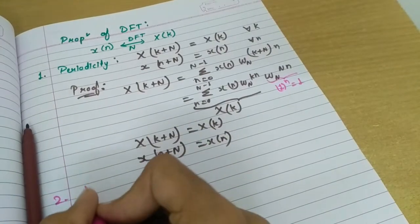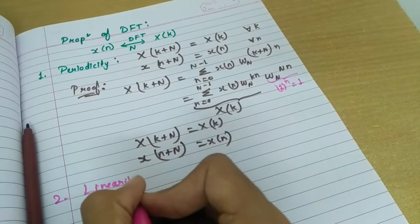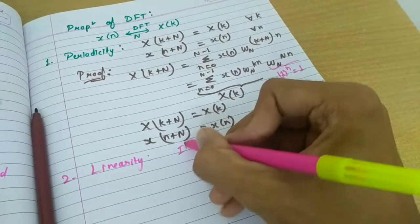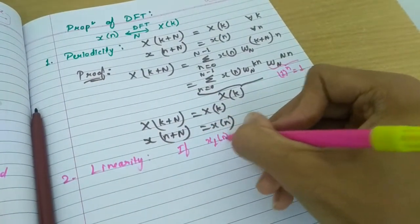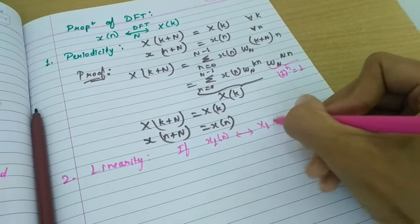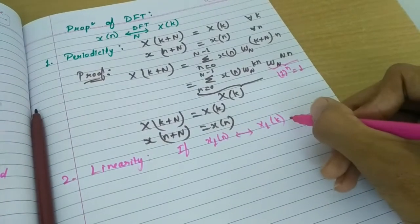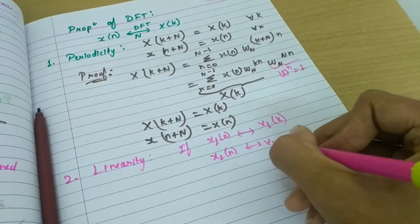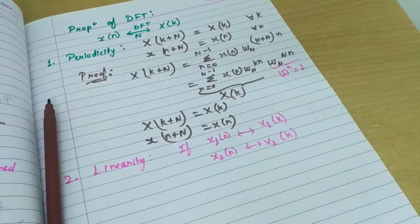Now, second property that is linearity. I am not going to prove it. Just I am stating this property that if X of n is having N-point DFT, X of k and similarly, Y of n is having Y of k.